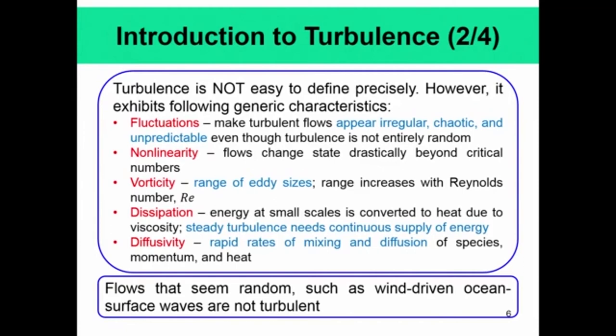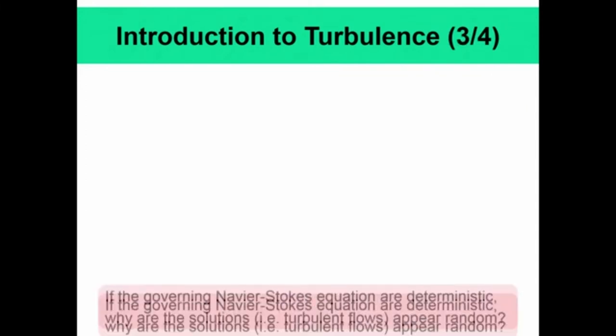Not all flows that appear random are turbulent — for example, wind-driven ocean surface waves are not necessarily turbulent, though they can be under certain conditions. When you see fluctuations and randomness, that does not automatically mean it is turbulence. Turbulence has its own specific characteristics.